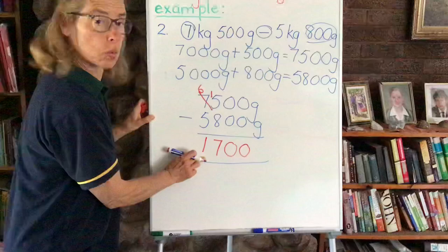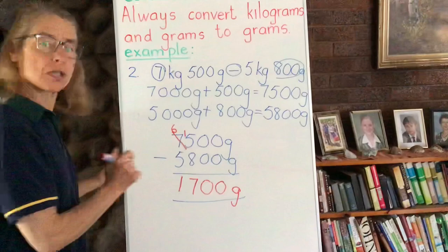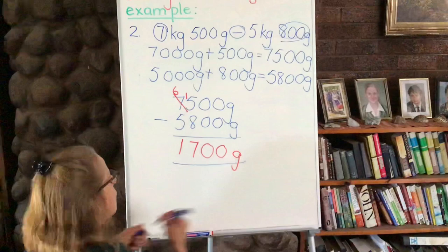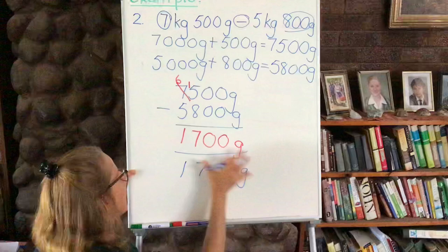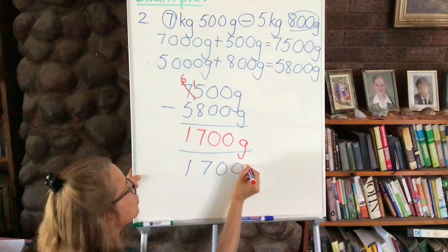Remember we need to convert that back to kilograms and grams if we are asked to do so, so we'll do that now. So we've got 1700 grams over here, and remember we're going to count from the right to the left, one, two, three places to the left, and here's our thousand.